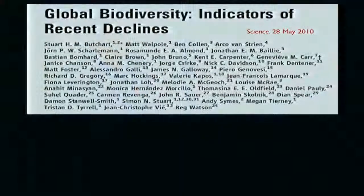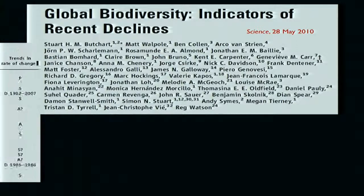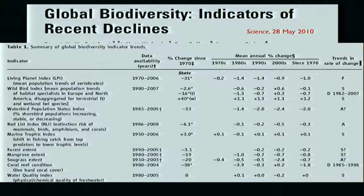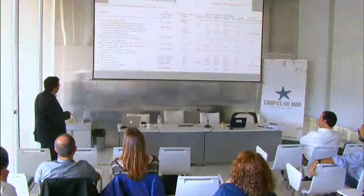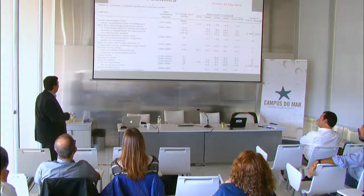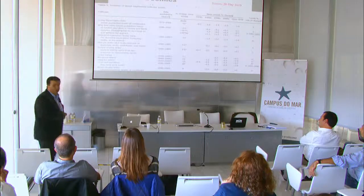The best paper on global biodiversity indicators and the indicators of decline was published in Science almost two years ago, by a large group of scientists doing a meta-analysis. The data you look at is really not data-rich. They've been able to get populations of birds or some red list species. When it comes to the aquatic environment, it's a pity that water quality — and biodiversity decline — is only based on physical and chemical quality. There is really no biological data.